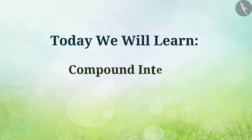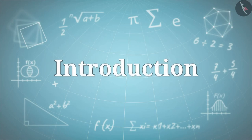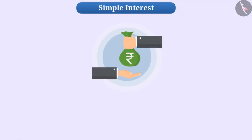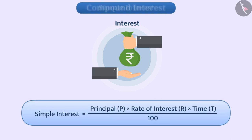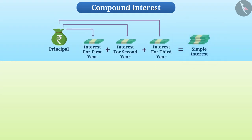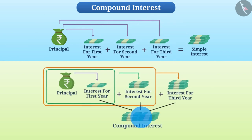Today we will learn compound interest. In the previous video we learned what interest is, as well as overviewed simple interest. The simple interest is derived on the principal and remains the same for each year, whereas compound interest, abbreviated as CI, is obtained on the total amount of the previous year. In this way, compound interest increases year after year.